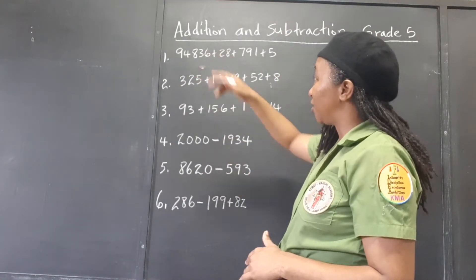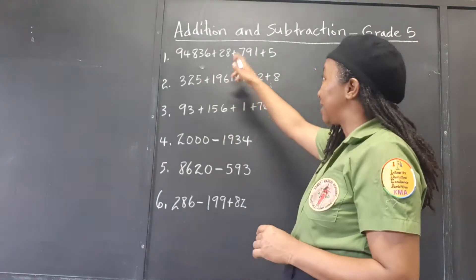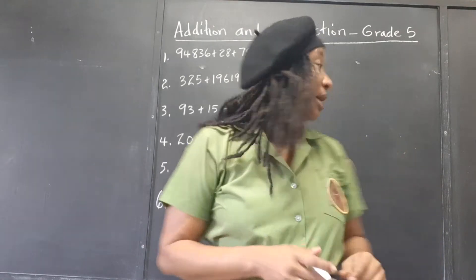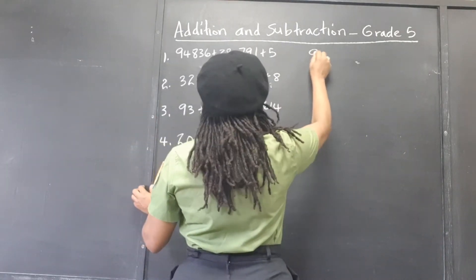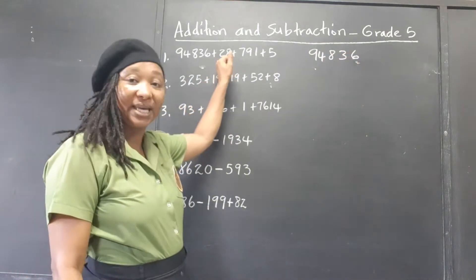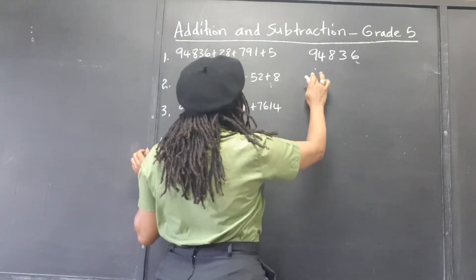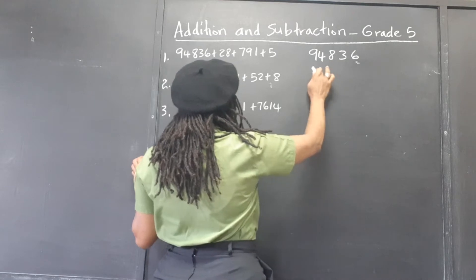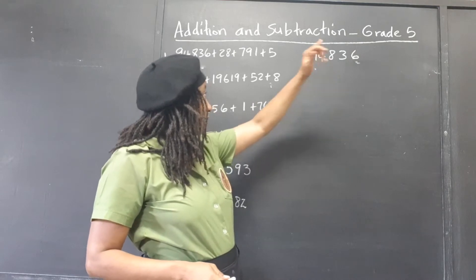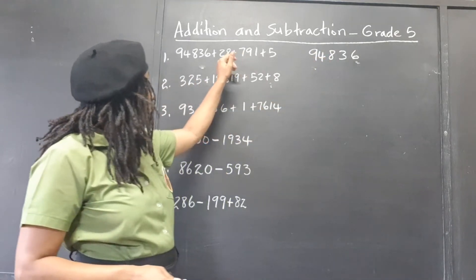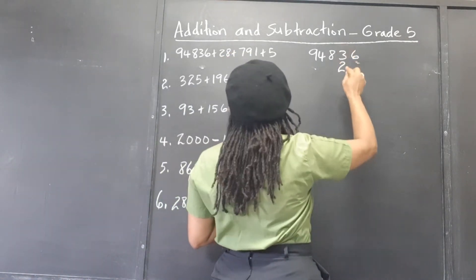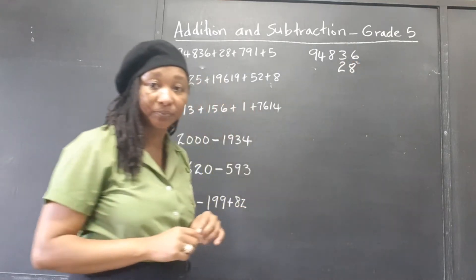So here we have 94,836 plus 28 plus 791 plus 5. We have 94,836. The 28 — that's two tens, eight ones. We can't put it over here; some children put it over here, but that would be wrong because that would be lining it up under the 90,000 and the 4,000, which is incorrect. This is two tens, eight ones. So we have to line up the two under the three in the tens place and the eight in the ones place.